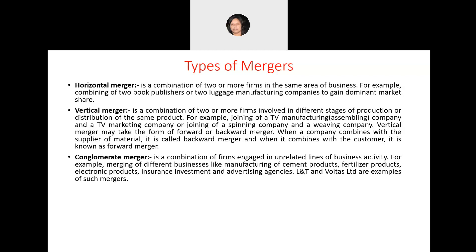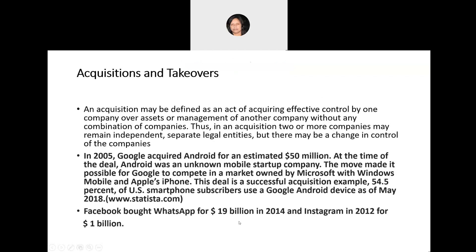A conglomerate merger is a combination of firms in unrelated lines of business activity — for example, a steel manufacturing company merging with a cement company, or a fertilizer company merging with an electronics company. L&T operates in different areas mostly related to engineering, projects, and consultancy. Voltas India, a Tata Group company, is in refrigeration and air conditioning — a merger between such unrelated businesses would be classified as a conglomerate merger.